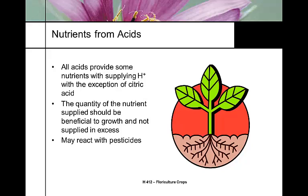Some acids react with pesticides — if you have high alkaline water, some pesticides are more effective if you drop the pH first. People often use phosphoric acid for this. However, those pesticides are primarily organophosphates, and we don't use too many organophosphates in greenhouses anymore.